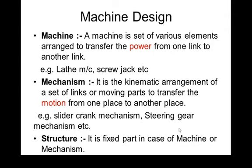A machine is a set of various elements arranged to transfer power from one link to another. The basic concept in a machine is power transfer. For example, a lathe machine or a screw jack — a screw jack is used to lift a vehicle, and when it is power-operated, it is called a machine.